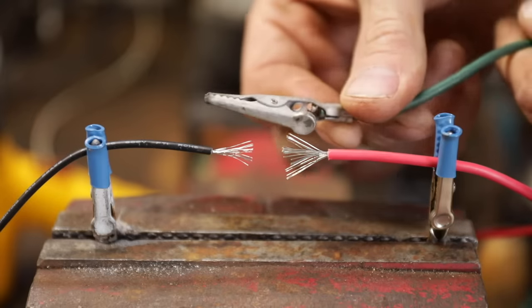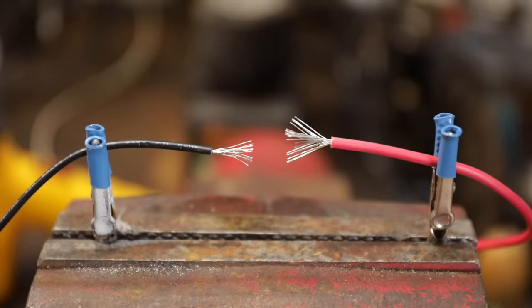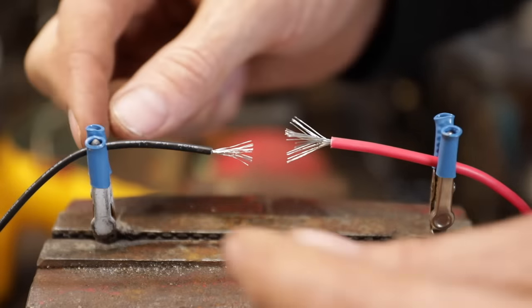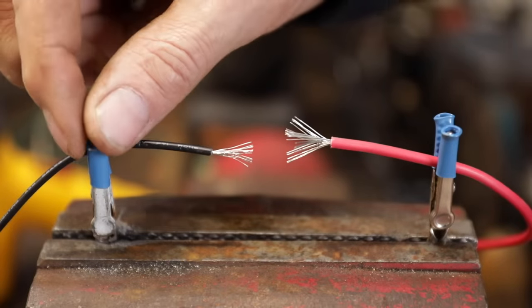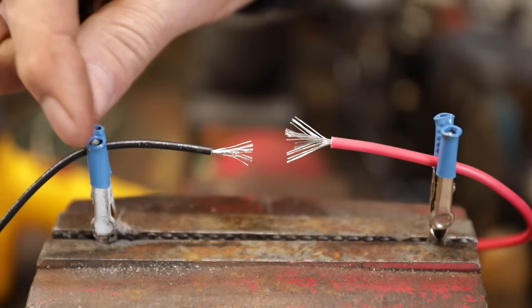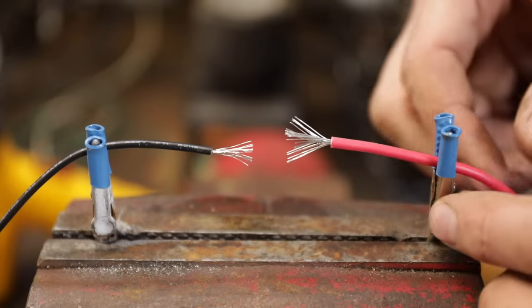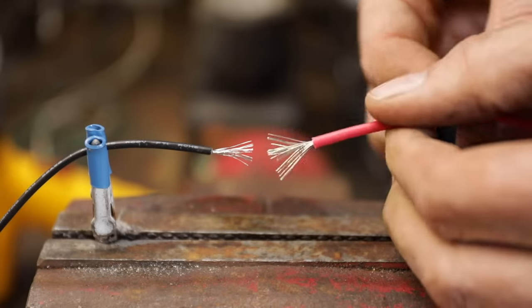Do yourself a favor and get a couple of these alligator clips. Take two alligator clips and clamp them in your vise like this. Take some shrink tubing on the ones you're going to keep in your kit and just melt it on there. That way they won't mess up your wire. This is going to hold things securely and you're going to get a whole lot better job.